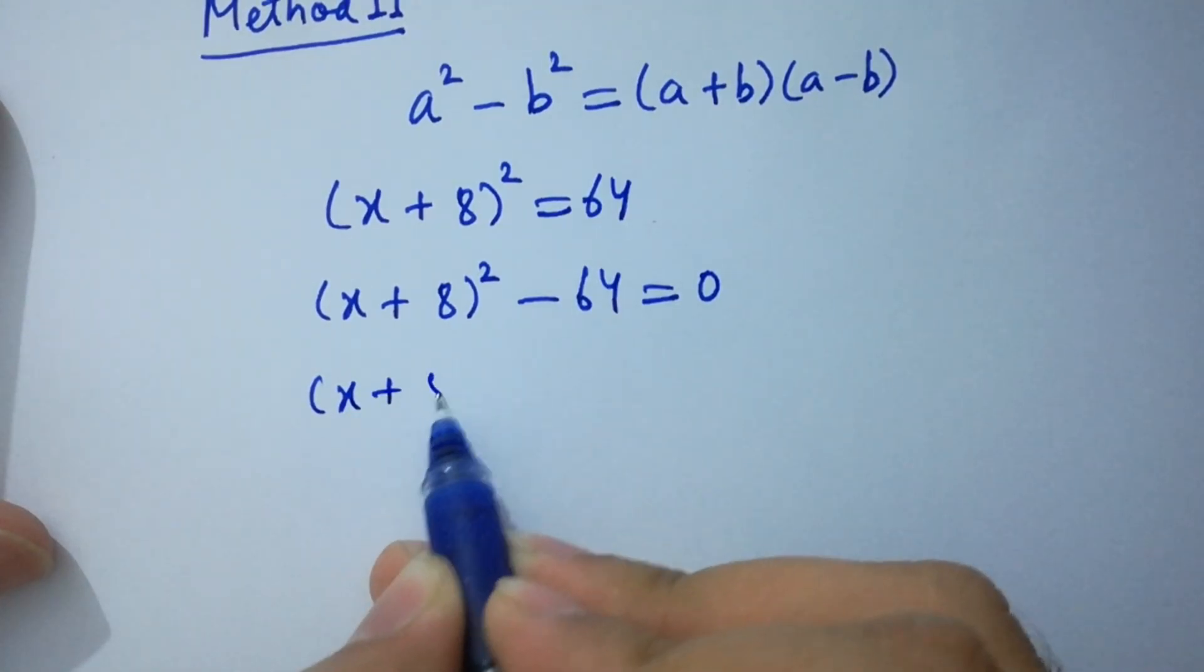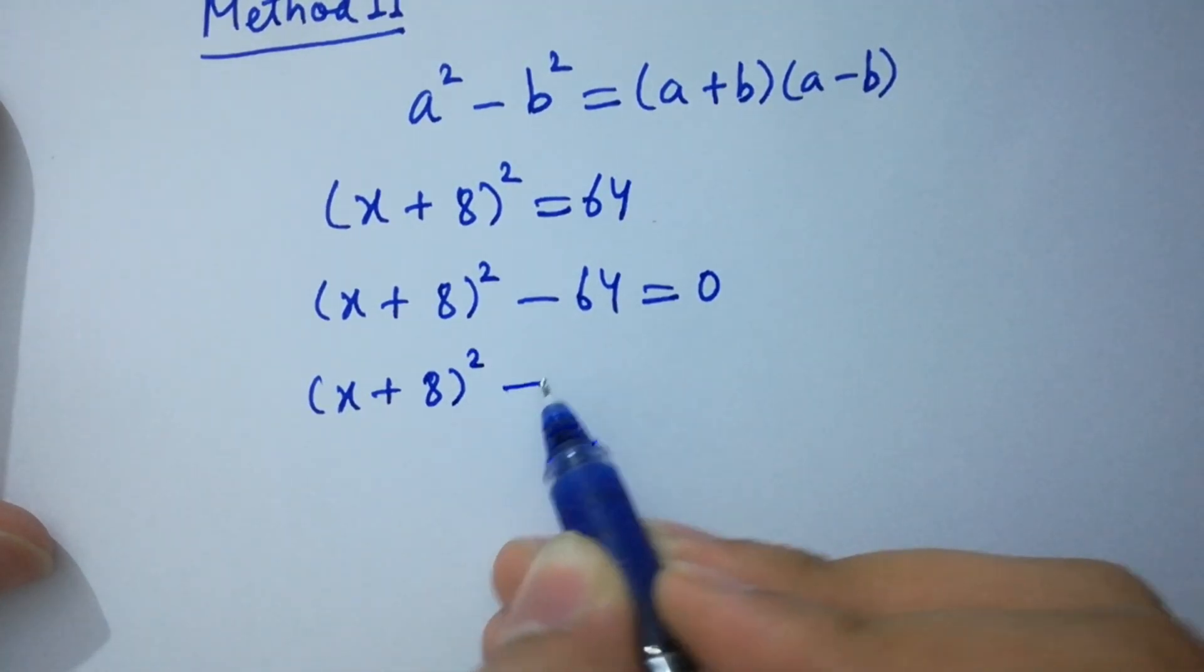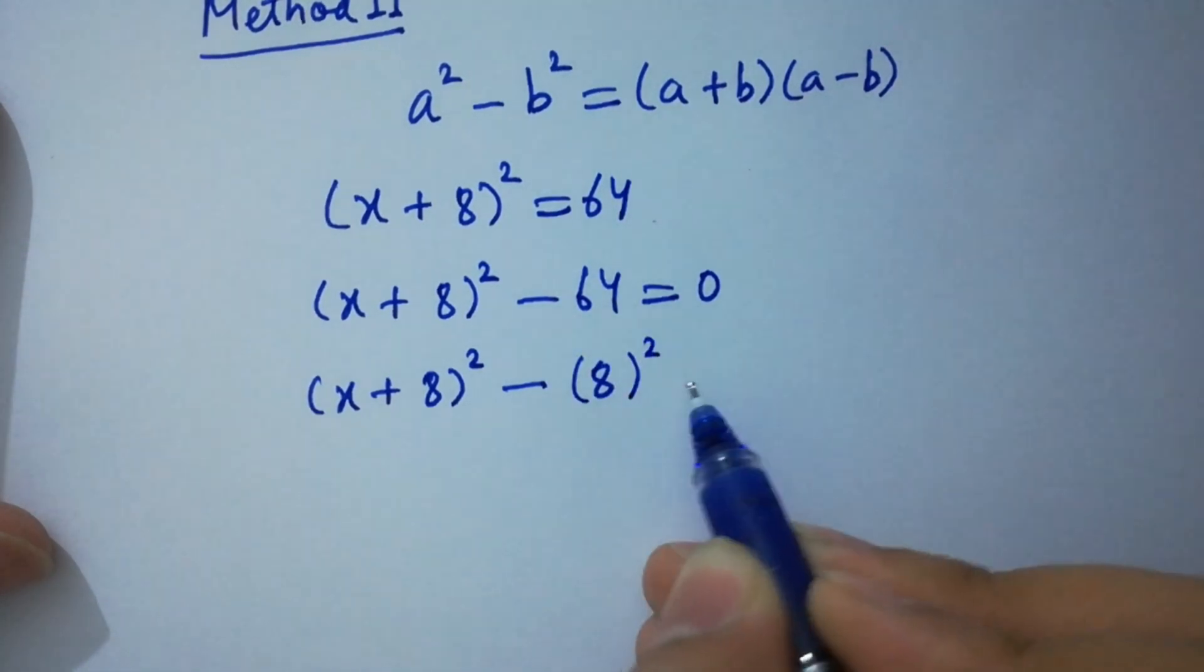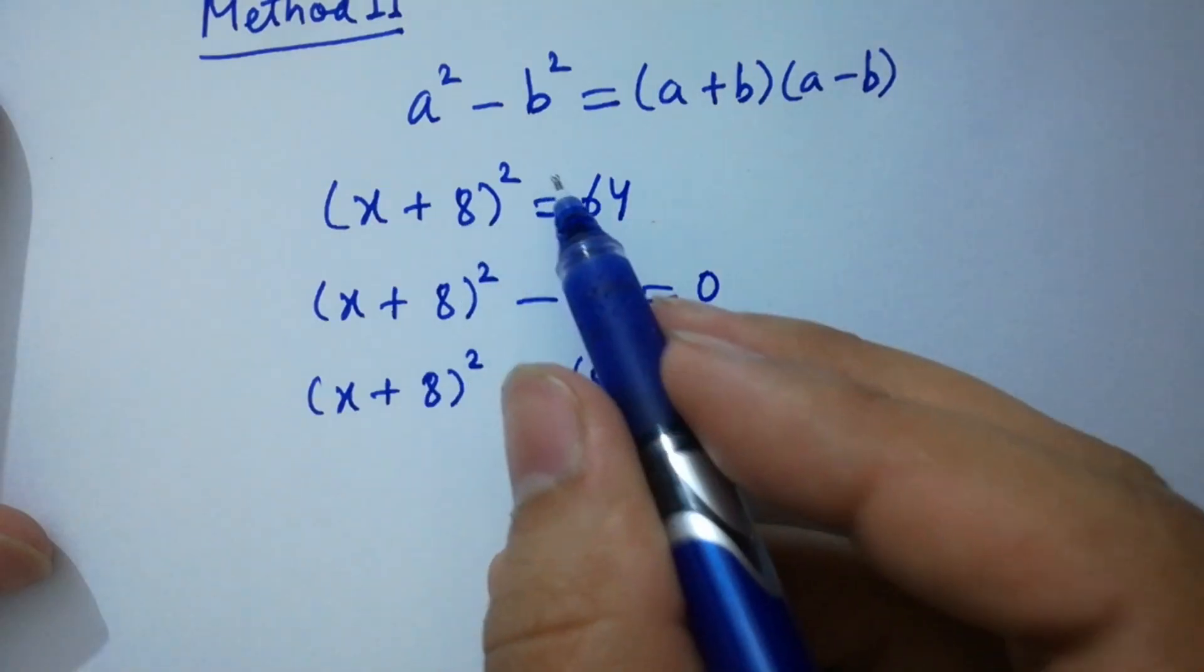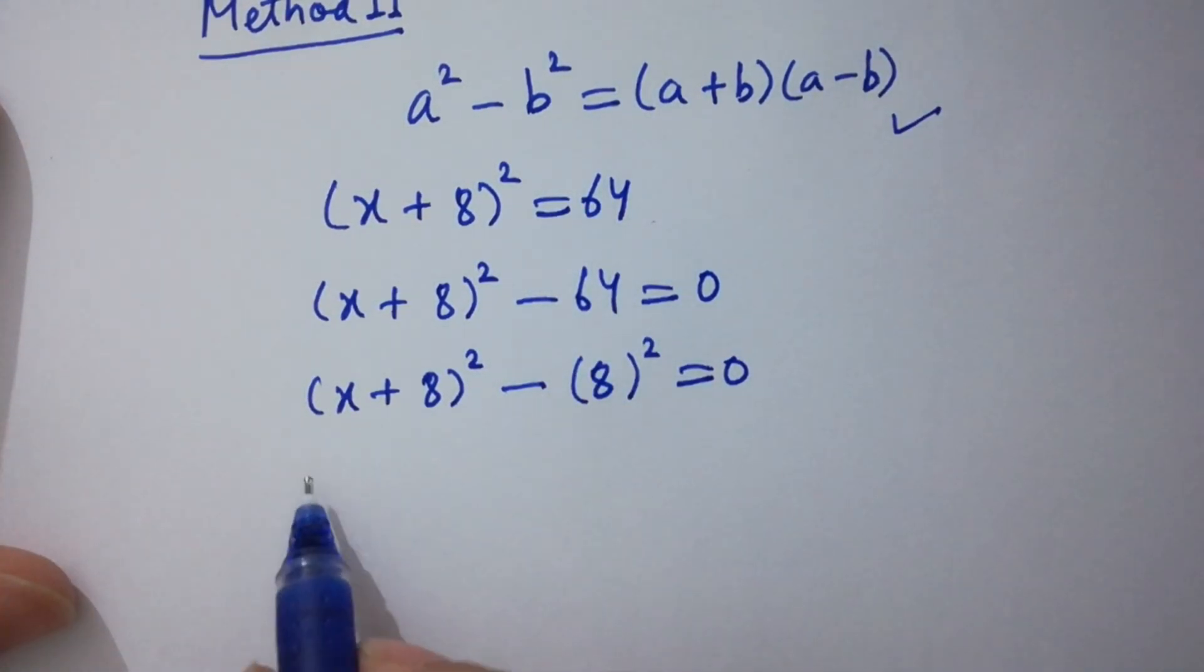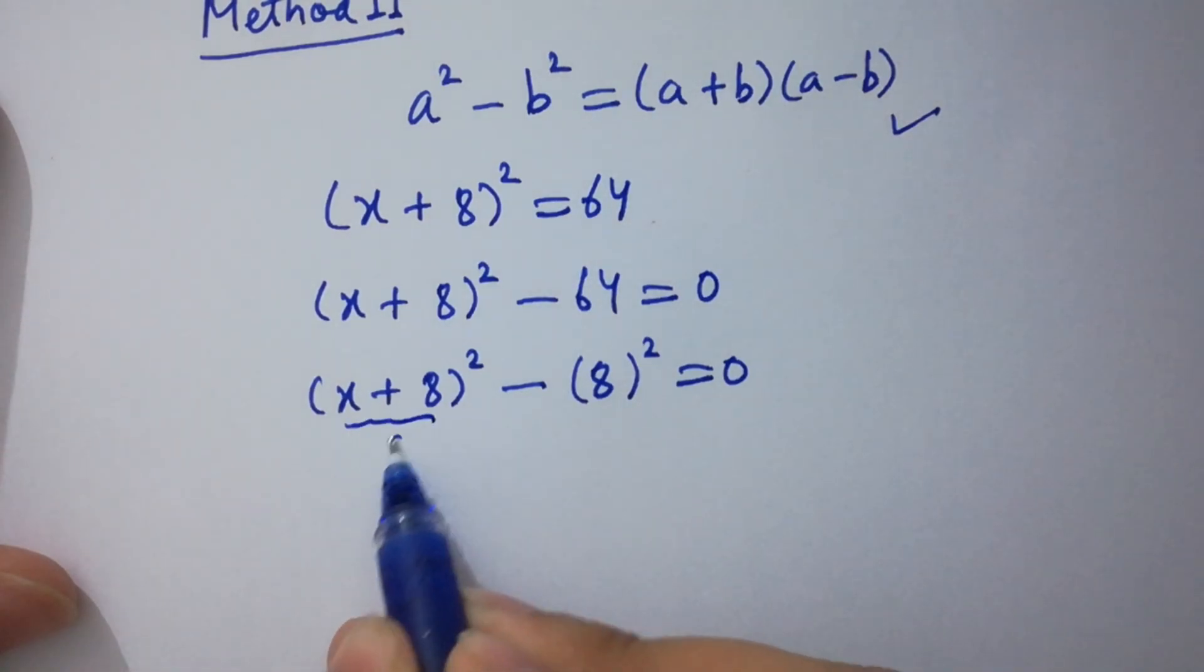(x + 8)² - 8² = 0. This is like a² - b², so we apply this formula.